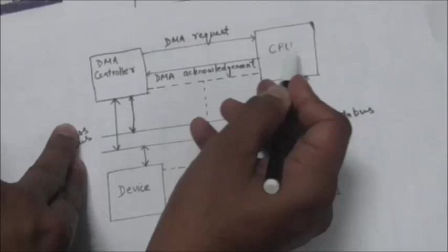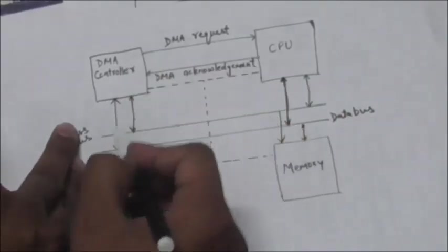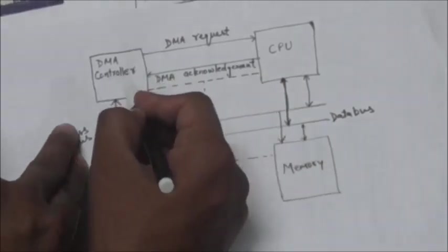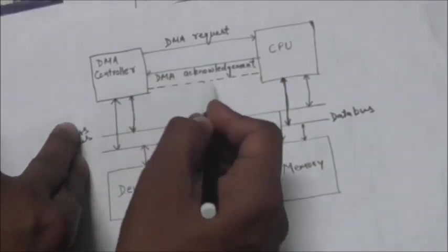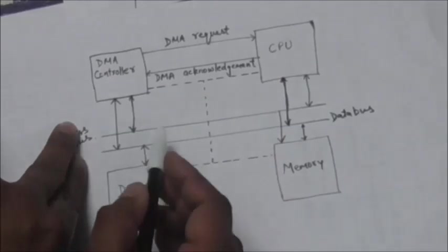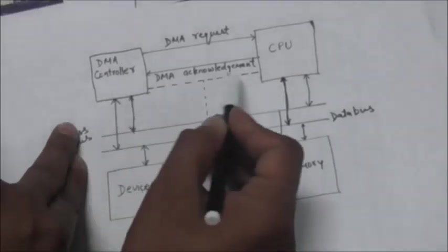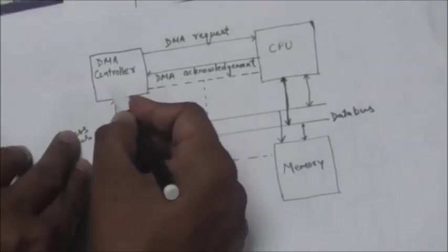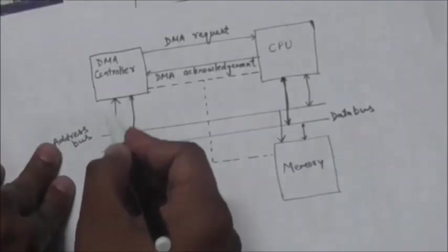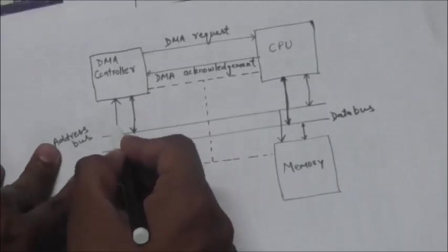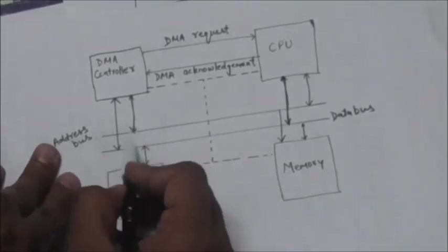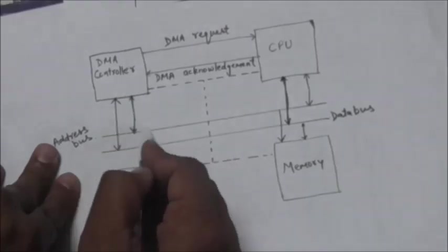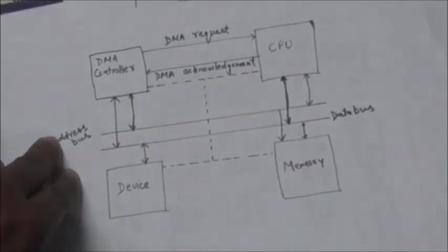In return, CPU sends an acknowledgement to the DMA controller granting it bus access. Now after receiving this acknowledgement from CPU, the DMA can take the control of bus to independently conduct memory transfer. And whenever this transfer is complete, the DMA relieves its control of the bus to the CPU.